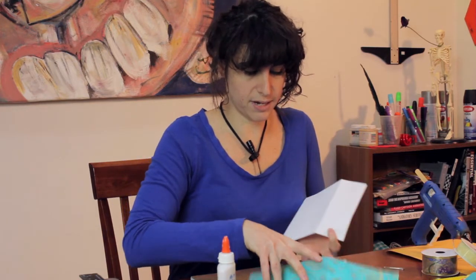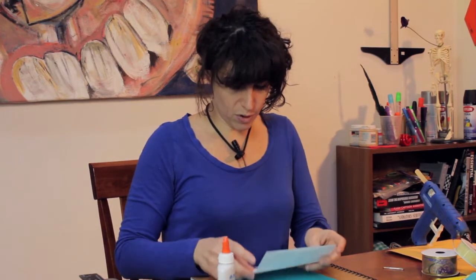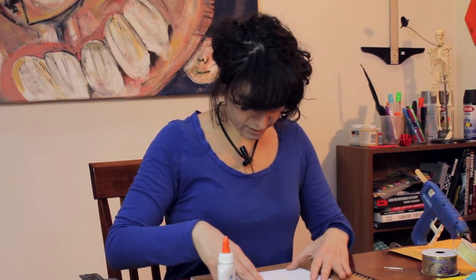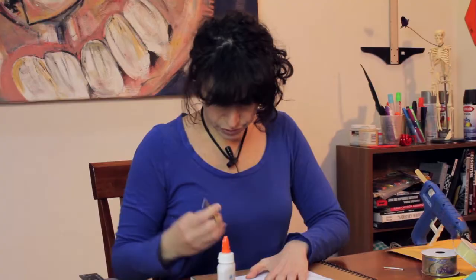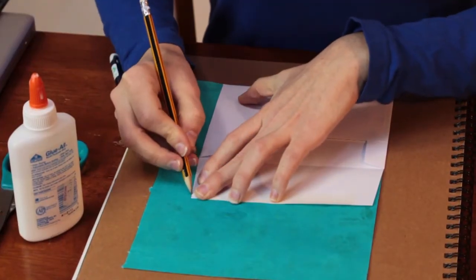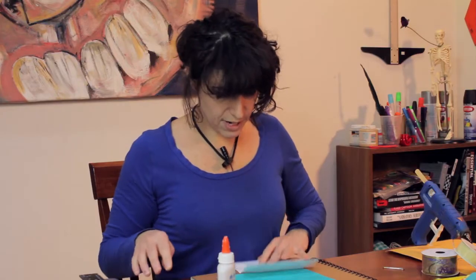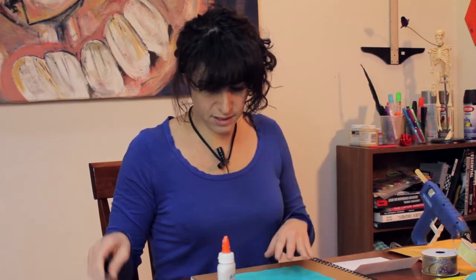So what we're going to do is turn the paper over so that the pattern is facing down and we're going to draw on the back. We're going to trace the envelope onto the paper, so now we have our space marked that we need to cut out.